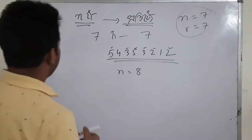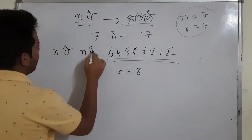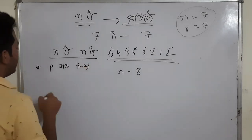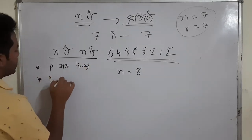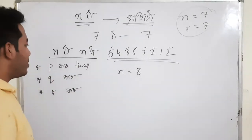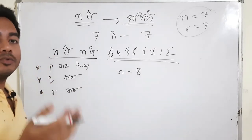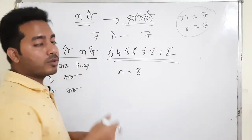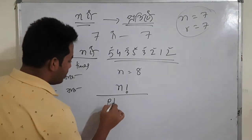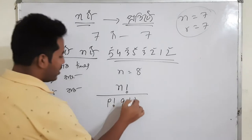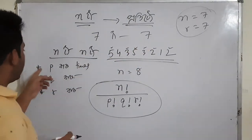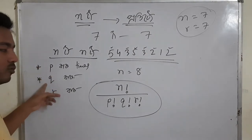I will do the formula type. Object number 1, P bar is repeated P times. Then Q times. Then R times. The formula is: n factorial divided by p factorial, q factorial, and r factorial. The entire entry is P, Q, and R.